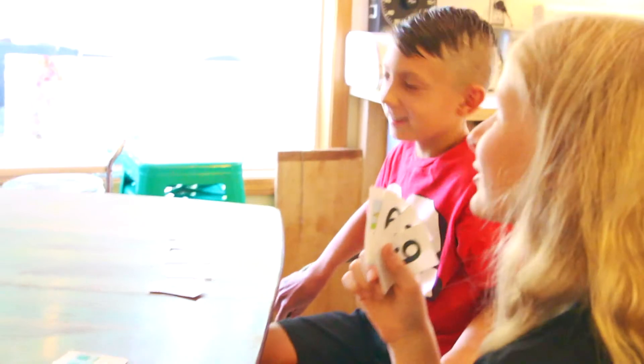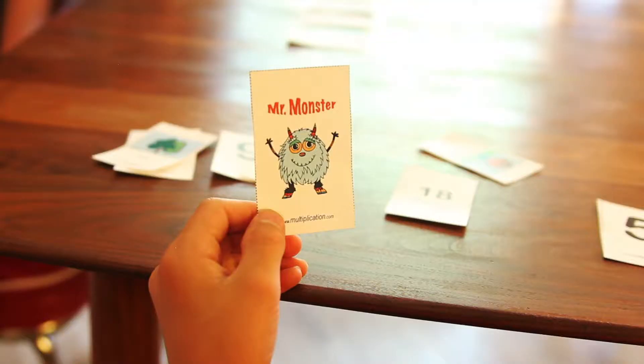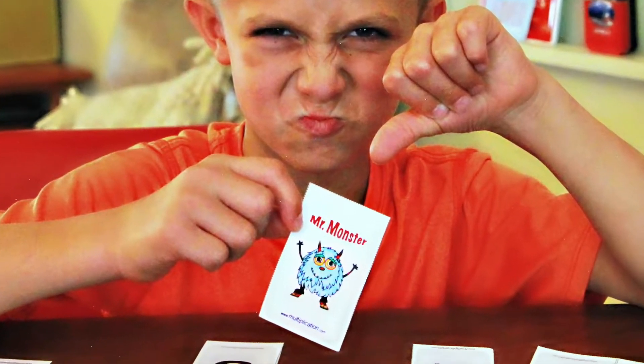Play continues going in order around the table until all pairs have been matched, except for one without a pair, Mr. Monster. Whoever ends up with the Mr. Monster card loses.